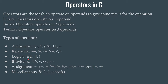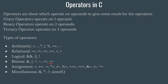Bitwise operators and logical operators perform more or less the same task. The only difference is that bitwise operators operate on single bits while logical operators operate on the entire value. The single ampersand (&) represents bitwise AND, the single pipe (|) represents bitwise OR, the caret (^) represents XOR, and then we have the left shift (<<) and right shift (>>) operators — these are also bitwise operators.